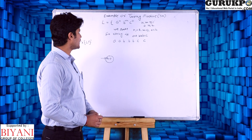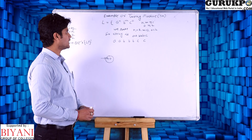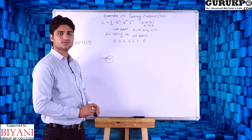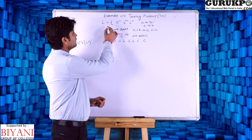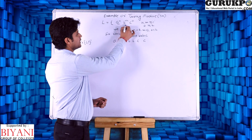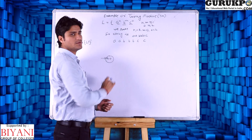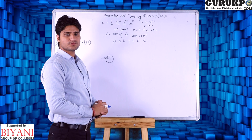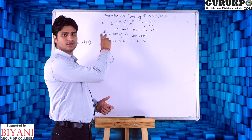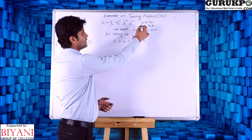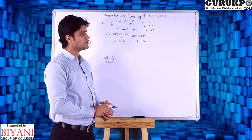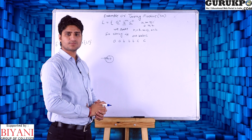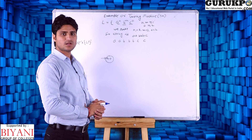First of all, I have taken the example of Turing machines with the language A^N B^M C^O, where we have three comparisons. N and M are greater than or equal to 1, and O is greater than or equal to 2. This is the example of Turing machines.